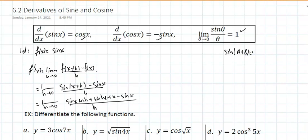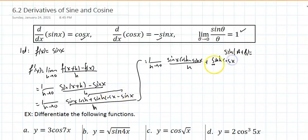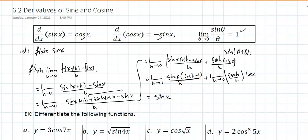Recall the sine addition formula: sin(a+b) = sin(a)cos(b) + cos(a)sin(b). Using that, I split the expression up. Factoring sin(x) out gives the limit as h approaches 0 of sin(x)[cos(h) - 1]/h, plus the limit as h approaches 0 of [sin(h)/h] times cos(x).